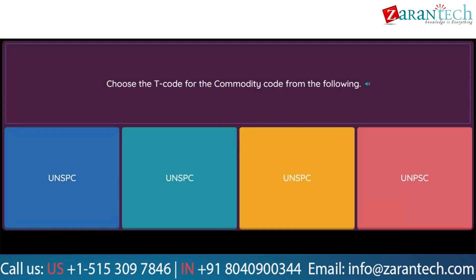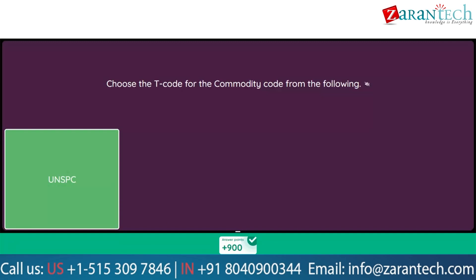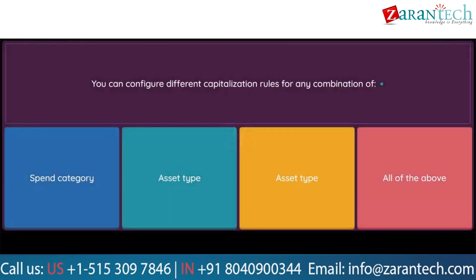Question: Choose the T-code for the commodity code from the following. Option 1, 2, 3, and 4: UNSPCC. Question: You can configure different capitalization rules for any combination of — Option 1: Spend category. Option 2: Asset type. Option 3: Asset type. Option 4: All of the above.